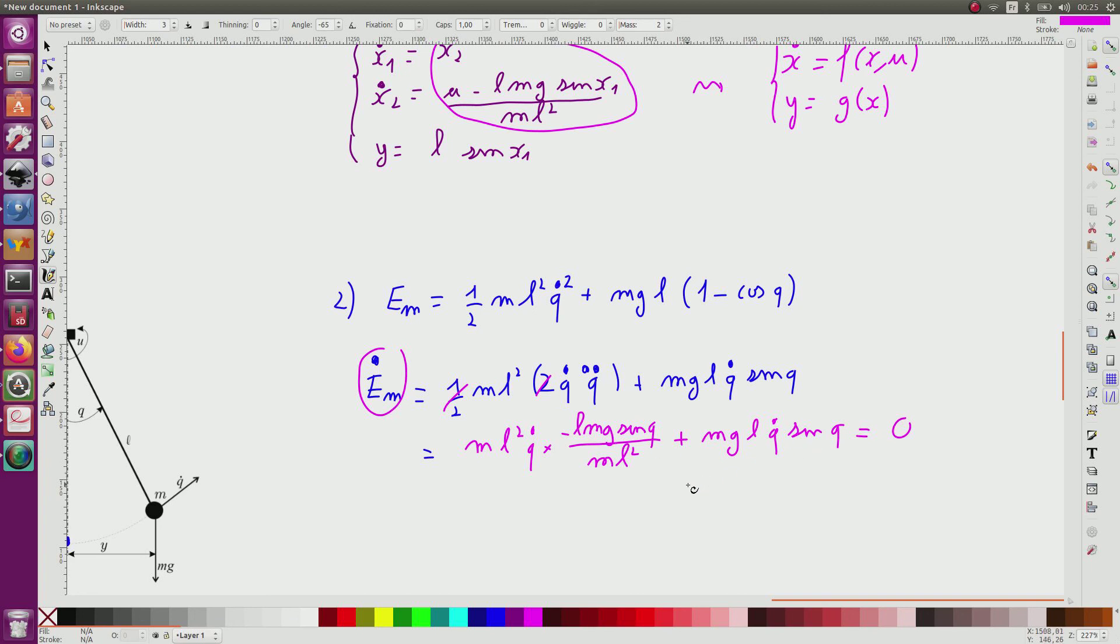So what I have proved here is that the mechanical energy of the pendulum remains constant, which is consistent with the fact that the pendulum without friction is a conservative system. And for such kind of system, there is also a possibility to find more quickly the state equation by using, for instance, the Hamiltonian method.